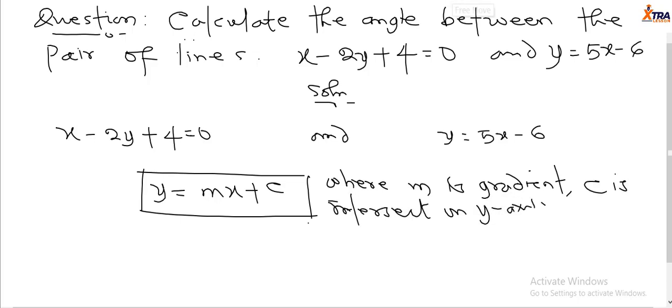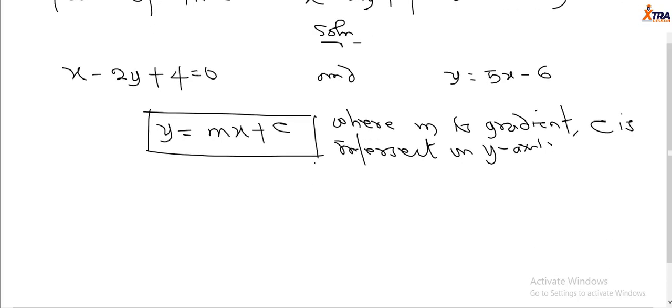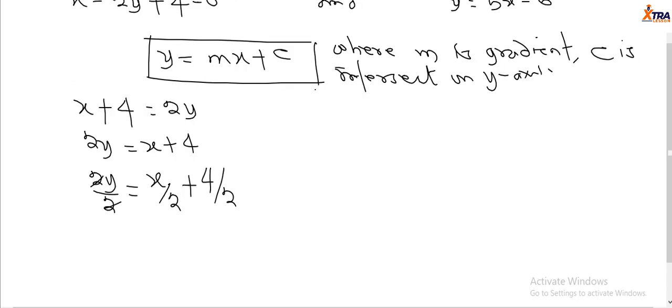Now we have to express the first equation in this form. We have minus 2y. First I will transfer minus 2y to the other side, so x plus 4 equals 2y, which becomes 2y equals x plus 4. Dividing by 2, we get x over 2 plus 4 over 2. We have y equals 1 over 2 x plus 2.